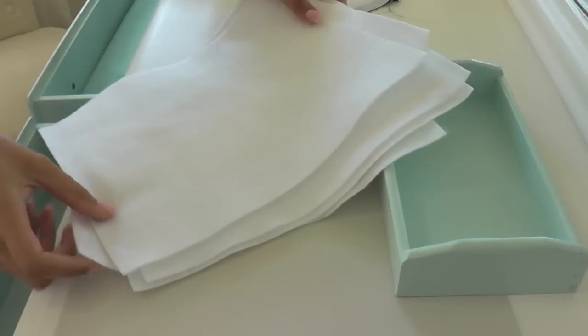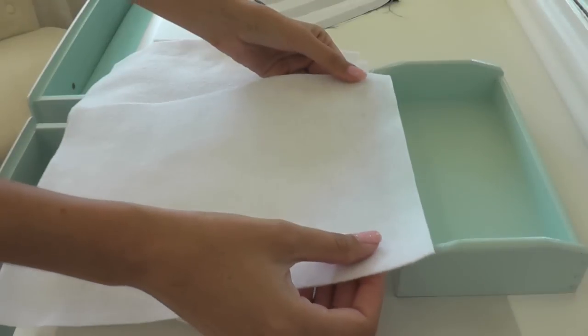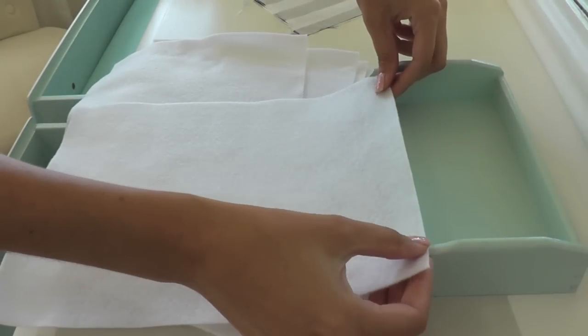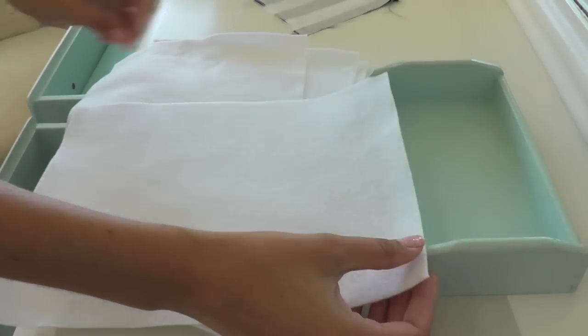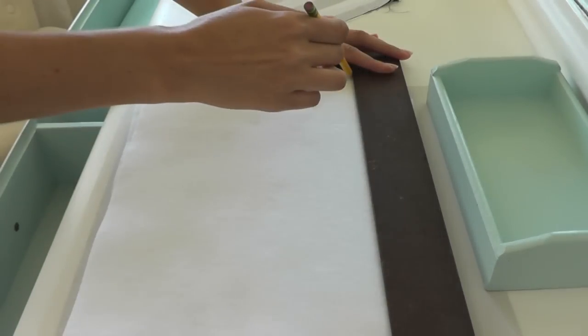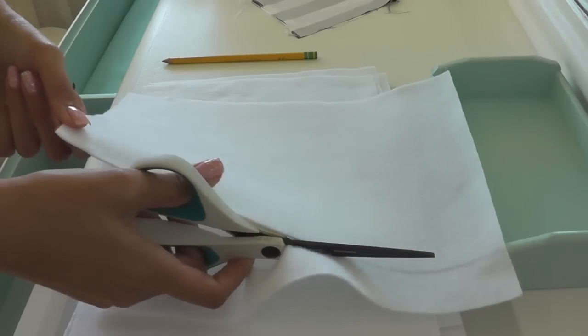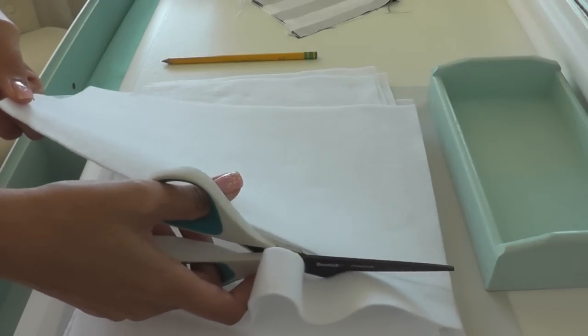I picked up some felt at the craft store. This is only 39 cents a piece, very inexpensive. I'm going to be measuring it out to fit inside my tray, and I'm just going to trace it so I know how much to cut off, and then trim it to the size that you need.